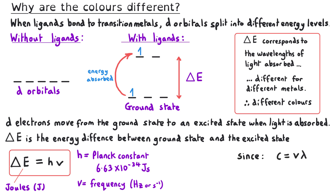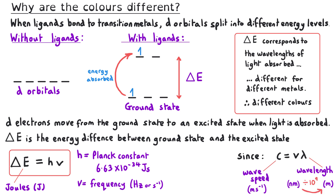Frequency and wavelength are linked together in the wave equation, where wave speed equals frequency multiplied by wavelength. Wave speed is in metres per second, and wavelength should be in metres. Sometimes you will be given a wavelength in nanometres, and a nanometre is a billion times smaller than a metre. So to convert nanometres into metres, you will have to divide by a billion.